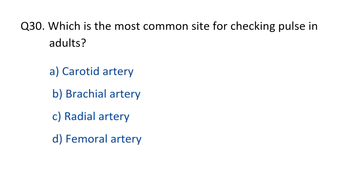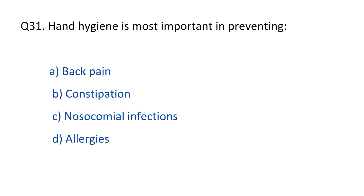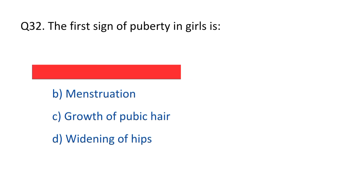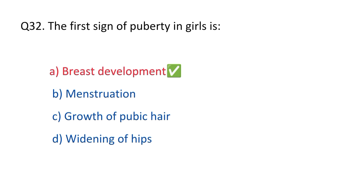Question No. 30. Which is the most common site for checking pulse in adults? The first sign of puberty in girls is? The right option is A, breast development.